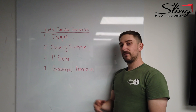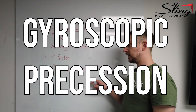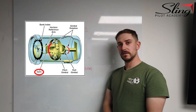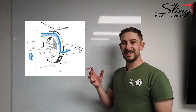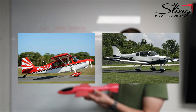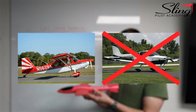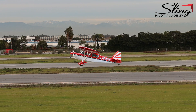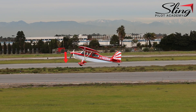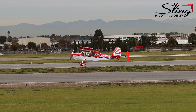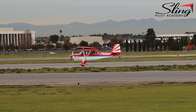Number four is called gyroscopic precession. Just like a gyroscope in our six-pack of instruments, the propeller is essentially a spinning disc. This isn't really a phenomenon that happens in a tricycle gear aircraft — it happens in a tail dragger. When flying a tail dragger on takeoff, you need to pitch the aircraft down to bring the tail up off the ground.